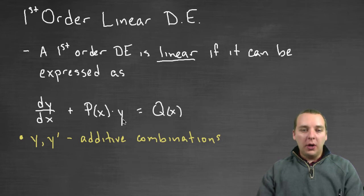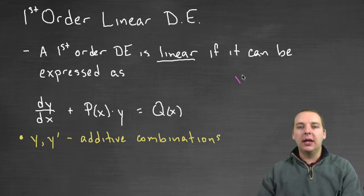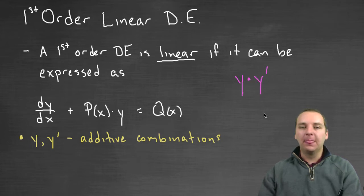Number one, the dependent variable and the dependent variable's derivative should be additive combinations. Notice you have y prime and then here you have y, but they're not being multiplied. You can collect all your derivative terms together and all your terms with y together and they should be added or subtracted, not multiplied. You should never have something like y times y prime in any linear differential equation.